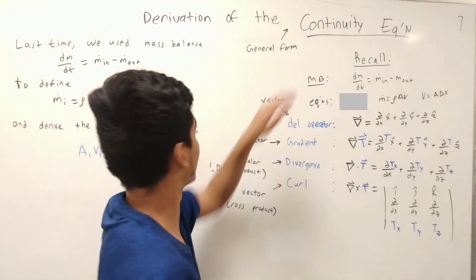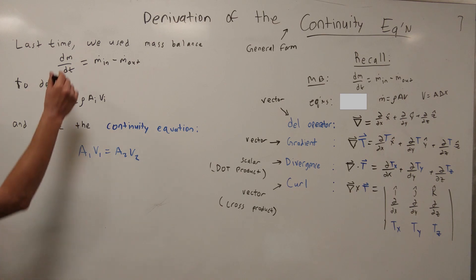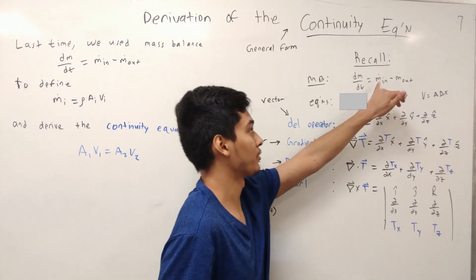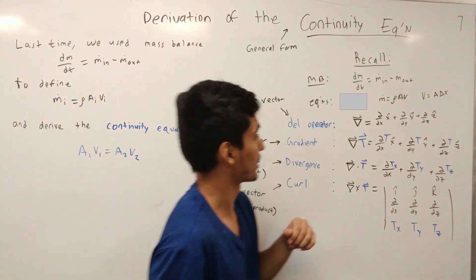So, real quick, for the mass balance, remember we defined the mass balance to be the accumulation, when in doubt, accumulation equals in minus out. And you're going to be adding up all the flow rates coming in and subtract all the flow rates coming out.